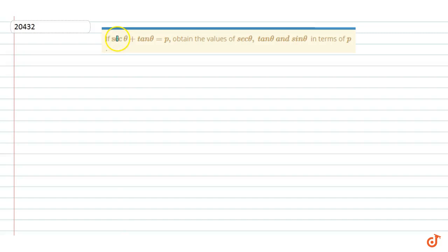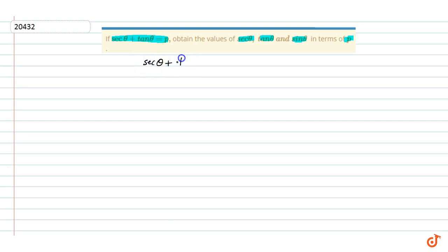In this question, it is given that if sec theta plus tan theta equals to P, then obtain the values of sec theta, tan theta, and sin theta in terms of P. So, we have given sec theta plus tan theta equals to P.